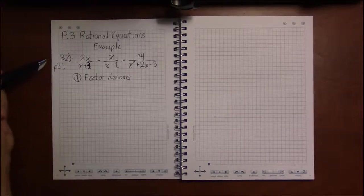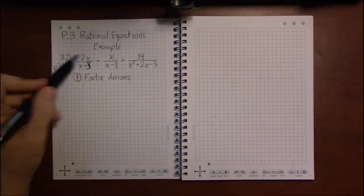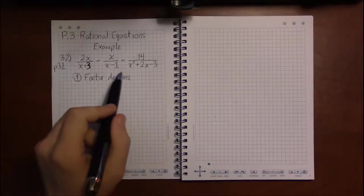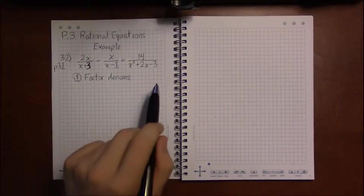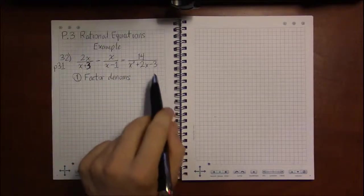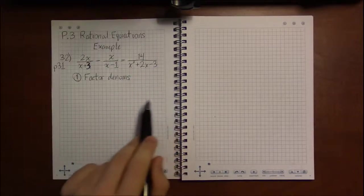I'm on page 31 looking at exercise number 32, where we have 2x over x plus 3 minus x over x minus 1, and all that is supposed to equal 14 over x squared plus 2x minus 3.